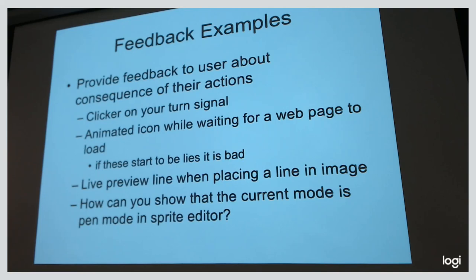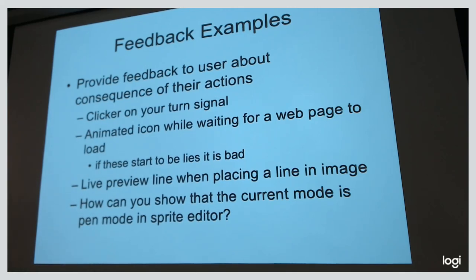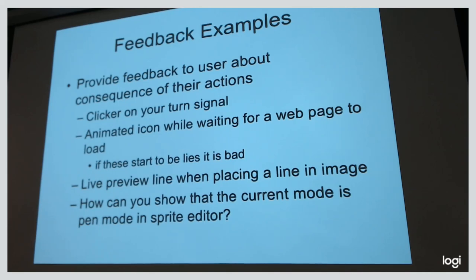In the Sprite Editor, for example, it's nice to show what a line would look like with some half-transparency as you draw it, then the line appears when you finish. Maybe you have different pen modes — fill, flood fill, spray brush. How can you show what mode you're in? You can highlight the active button on the side, have a little pixel following the mouse, or change the cursor icon so it looks like whatever's about to happen.